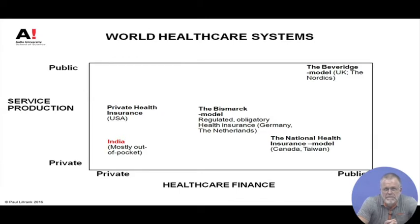In other parts of the world, the opposite is the UK's Beveridge model, where health finance is 100 percent tax-based and service production is almost 100 percent based on public organizations with budgets from the state. In the Nordic countries there is a similar Beveridge model, although in Finland about 25 percent of finance comes from private sources. You pay an appointment fee of about 20 euros, while the production cost is 60 to 100 euros, to keep people from overusing services.